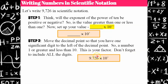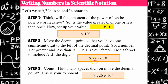Remember, you've got to keep all the digits. Now, the last step: count how many places I moved that decimal point — one, two, three. That is my exponent. If you think about it, 10 cubed is 1,000, and 1,000 times 9.726 is equivalent to 9,726. So these are equivalent values, just two different ways of writing it — this is standard form and this is scientific notation.